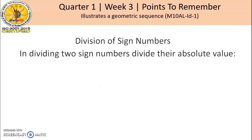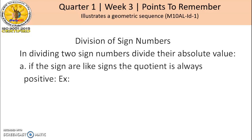In dividing two signed numbers, divide their absolute value. If the signs are like signs, the quotient is always positive. Examples: Letter A, negative 25 divided by negative 5, the quotient is positive 5. For letter B, negative 72 divided by negative 9, the quotient is positive 8.